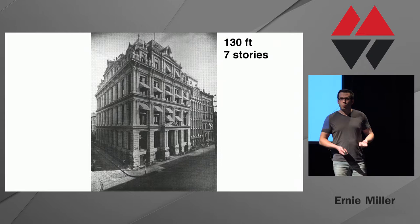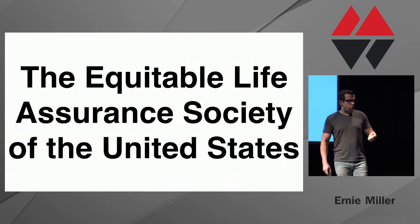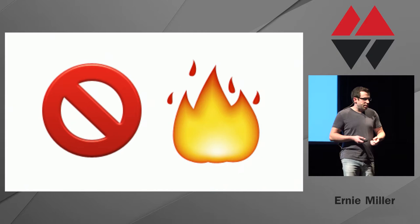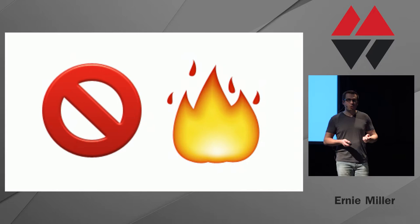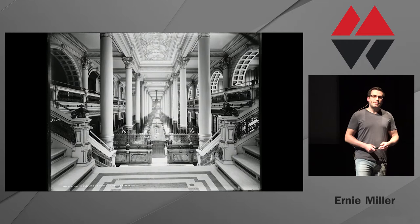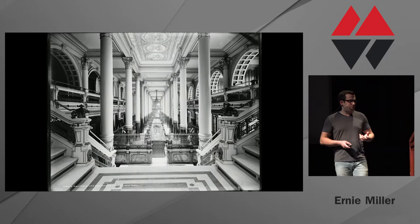The Equitable Life Building was the tallest in the world from 1870 to 1884. It was built and owned by the Equitable Life Assurance Society of the United States — I'm just going to call them Equitable from here on. Equitable, being a life insurance company, were experts at assessing risk, and so it's important to note that they had determined their building was fireproof — we'll come back to that later. Its basement housed safes and vaults filled with several billions — and I do mean billions — in 1870s dollars of securities, stocks, and bonds. The Equitable Life Building was the center of most of the wealth of the New York Financial District.